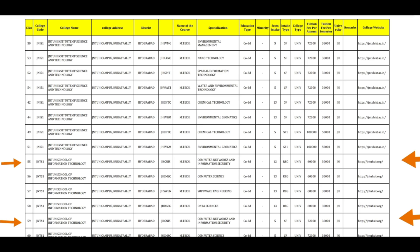Here is a perfect example to understand the difference between regular and self-finance courses. You can see serial number 55 and serial number 59. I will show you the same course, the same university, and the same college — that is Computer Networks and Information Security — so you can compare the intake type and tuition fee per annum and per semester for both.